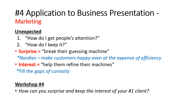Application number four: now we're going to take and start to build this marketing plan. Unexpected — how do you get their attention and how do you keep it? One way is to surprise them — break their guessing machine. The example they used was Nordstrom's, where they make the customer so happy at the expense of efficiency: you're not very efficient, but the customer is completely happy, so that extra mile does a lot for them. Interest is the second one — it's about filling those curiosity gaps and helping them refine their interests. Workshop number four: pause here. How can you surprise and keep that interest for your clients? Go back to that number one client — that cash cow — and do that.